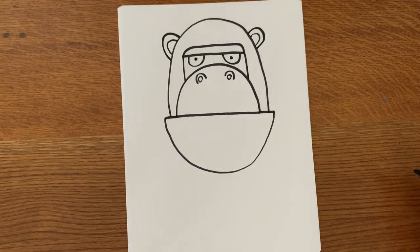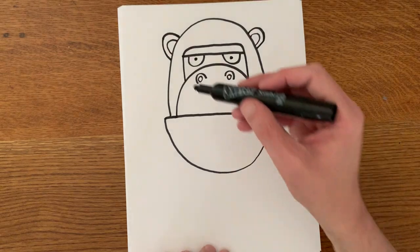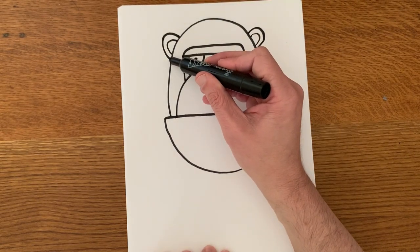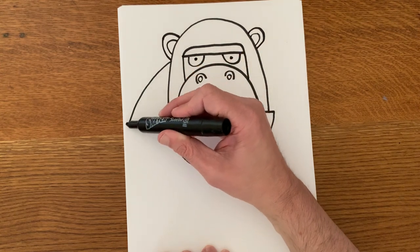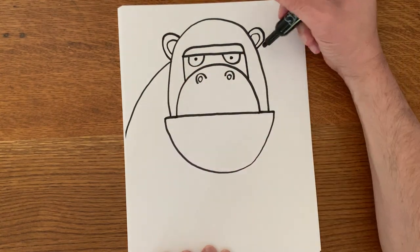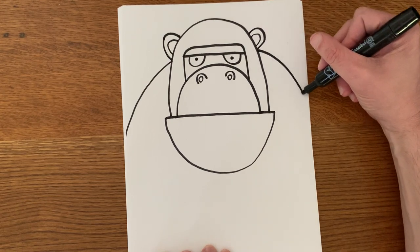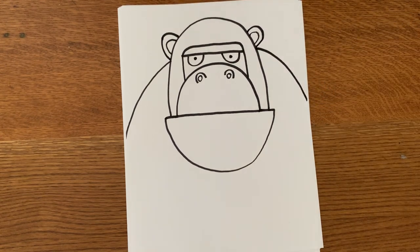Now because he is a big hulking gorilla with a big body, I'm going to show that by making the body actually begin up here, just under the ear and a curve down to the edge of the paper. And this gives the illusion that he is quite massive.